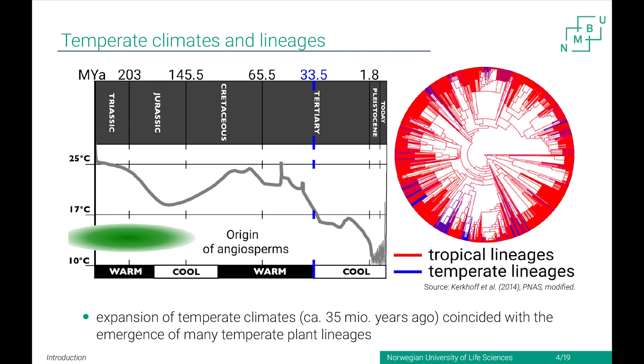That's a phylogenetic tree of 10,000-plus species. You can see the ancestral lineages were all tropical, and temperate lineages started to emerge independently of each other approximately around the time of the Eocene-Oligocene boundary and afterwards. This pattern you can find in many other plant groups, even in animals and some fishes.